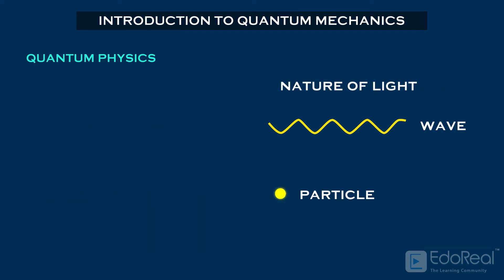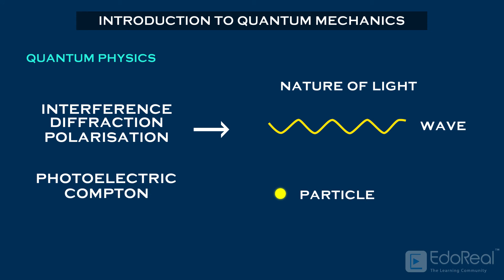The theory of interference of light, diffraction, polarization of light are explained based on the wave nature of light in quantum mechanics. Whereas phenomena like photoelectric effect, Compton effect, Zeeman effect, etc., are explained using the particle nature of light.